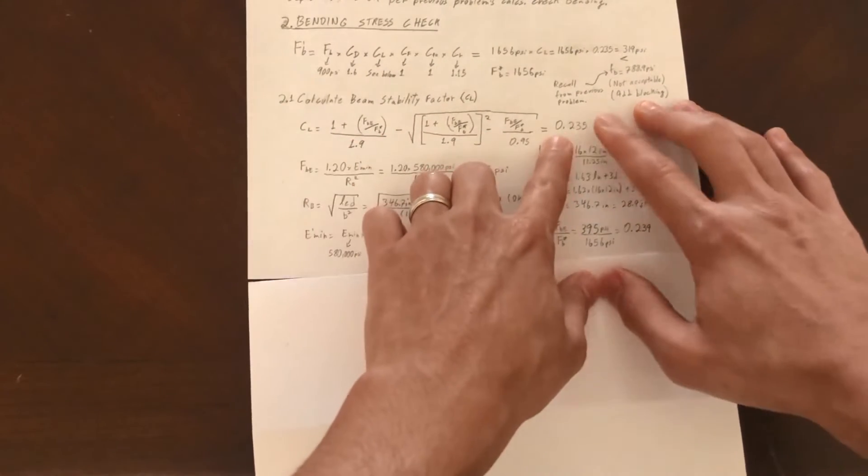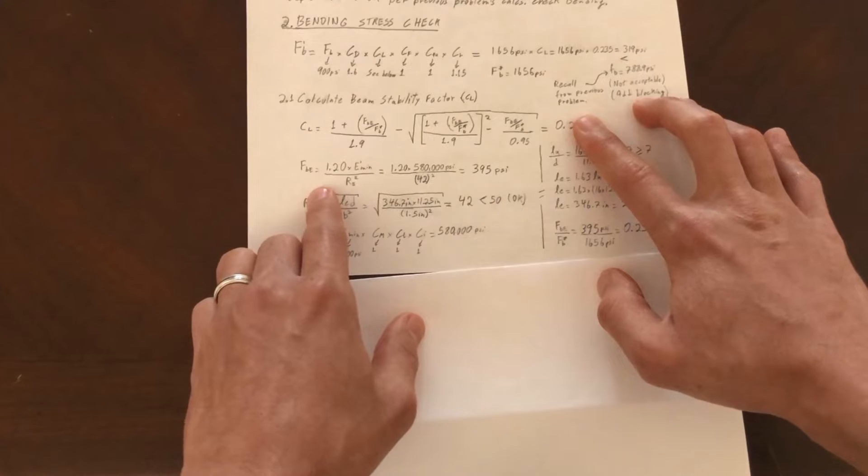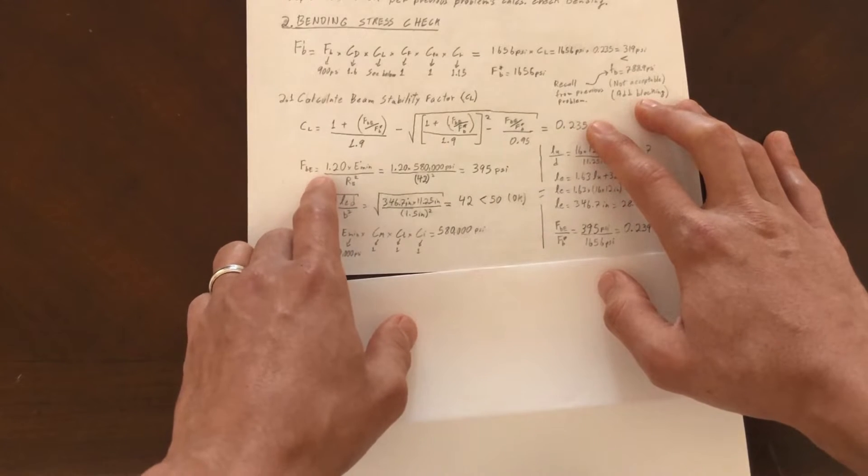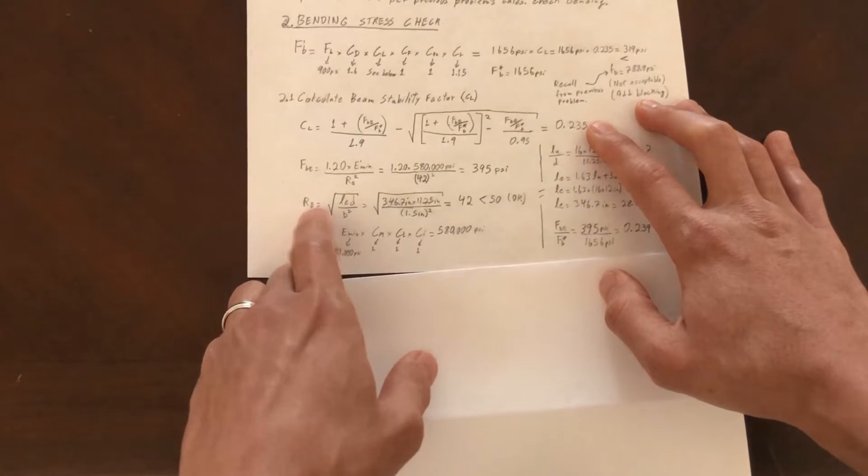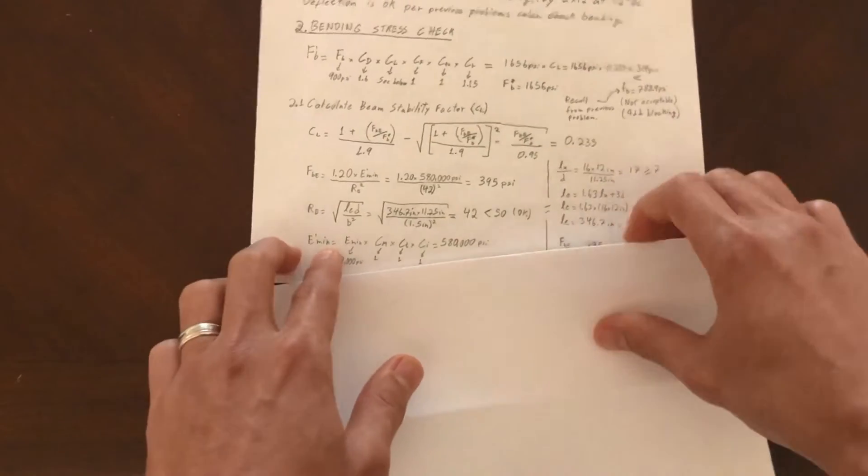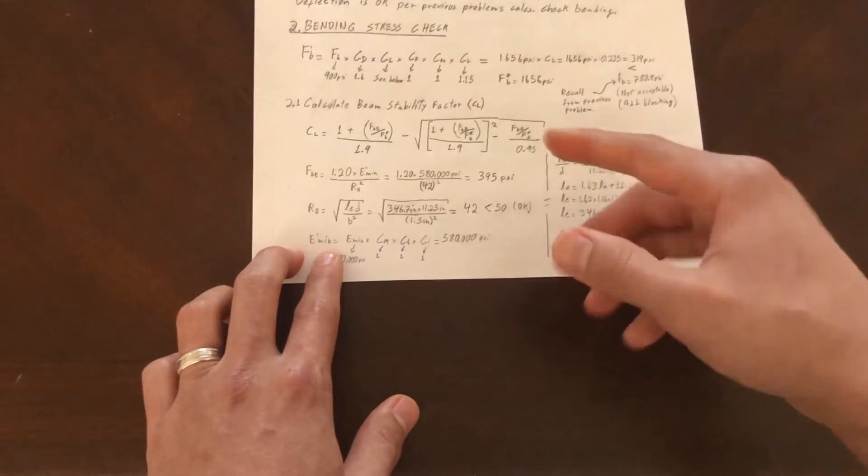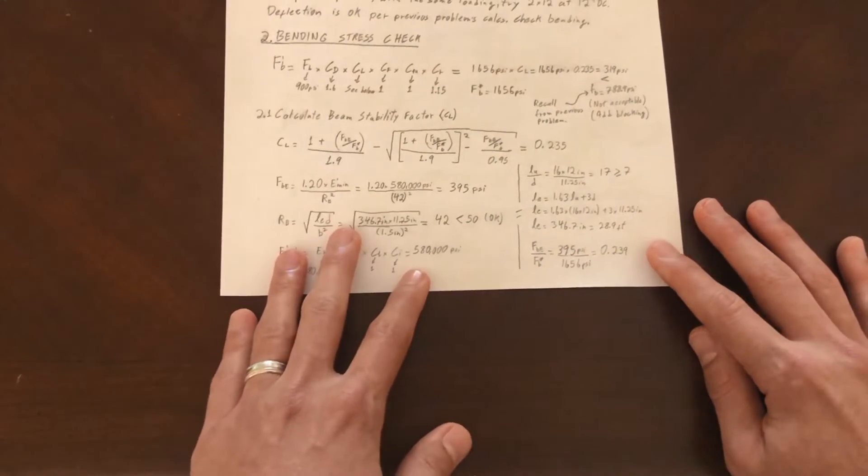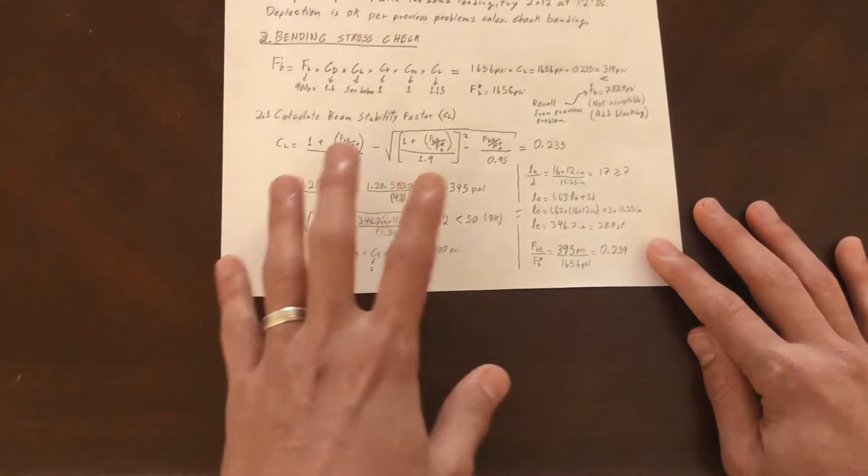We're going to see it here - all that big formula. Then what we need, we know we need to calculate F sub B E, we need to calculate R sub B, and we need to calculate E min, E minimum prime. So there are a lot of things to calculate, and that's the thing with NDS and with design - lots of factors and a lot of empirical equations.